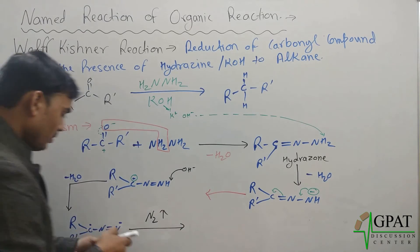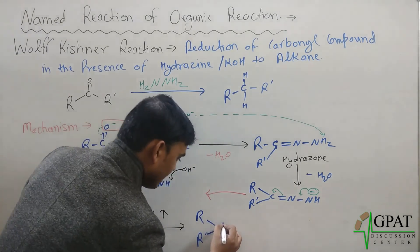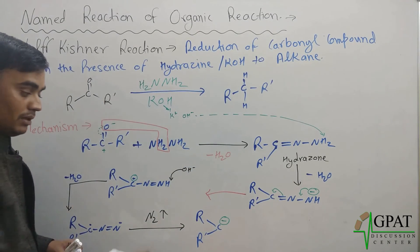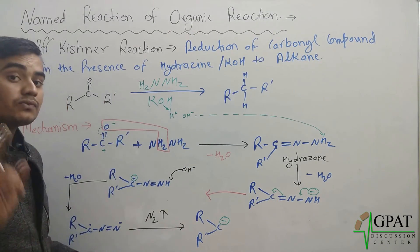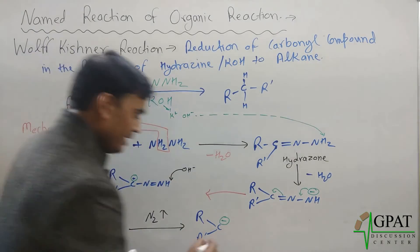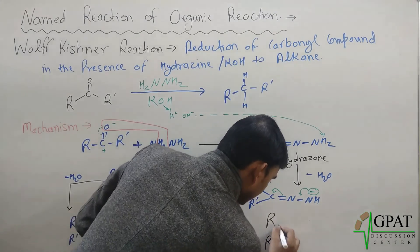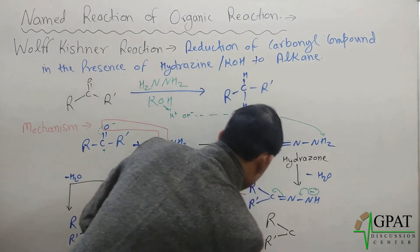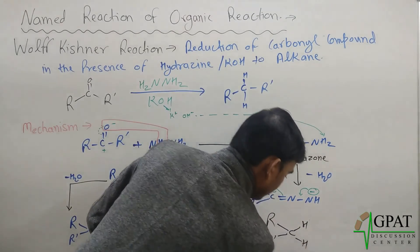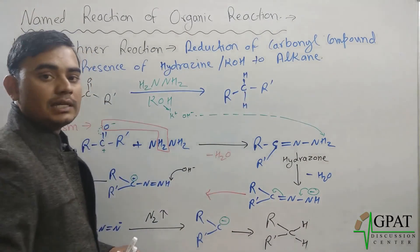After N₂ is released, a carbanion R-C⁻-R' is formed. Since a carbanion is very unstable, it takes hydrogen ions from the medium. Two hydrogen ions are added to complete the valency, giving the final product R-CH₂-R', which is our alkane.